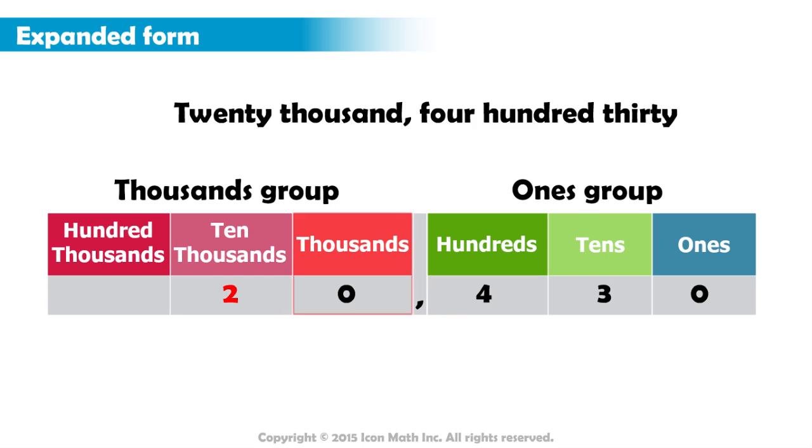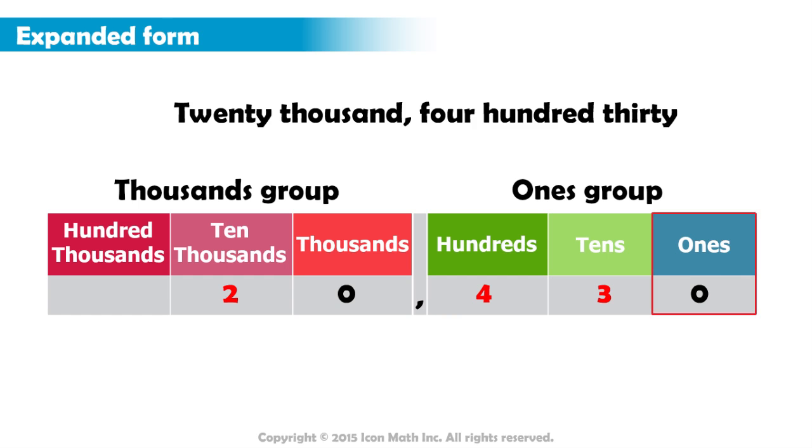Then comes the next digit, which is a zero, so we ignore it. And we move to the next digit. We have a 4, which is not a zero, so we highlight it. Then 3, which we also highlight, and finally 0, which we'll ignore.